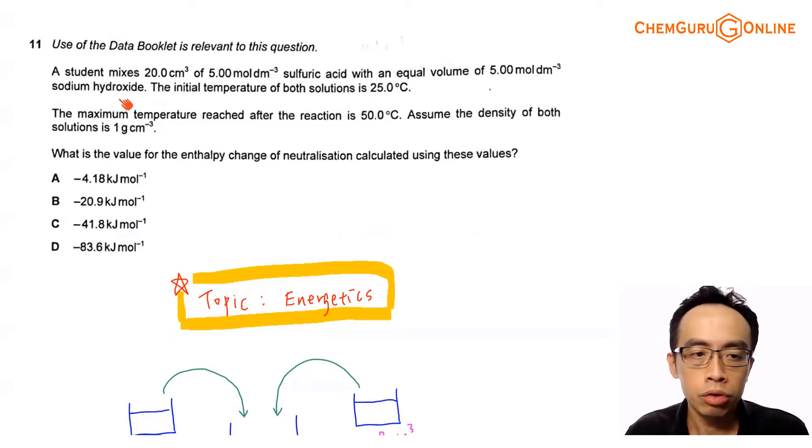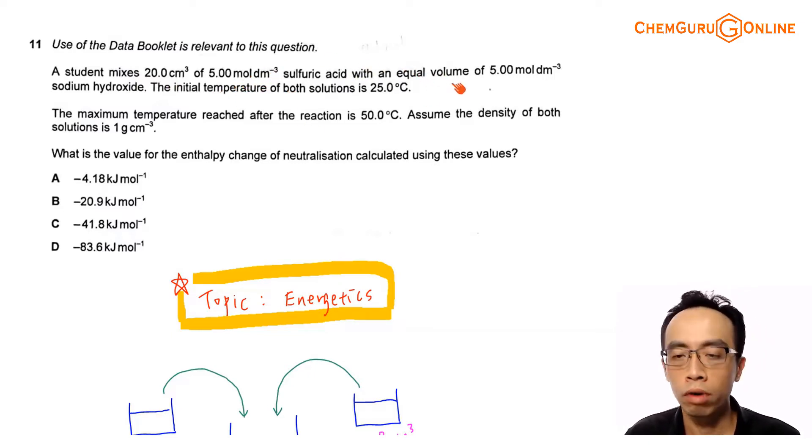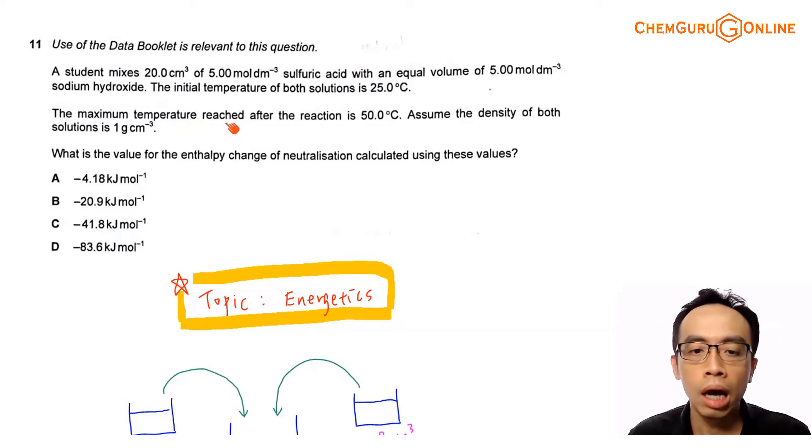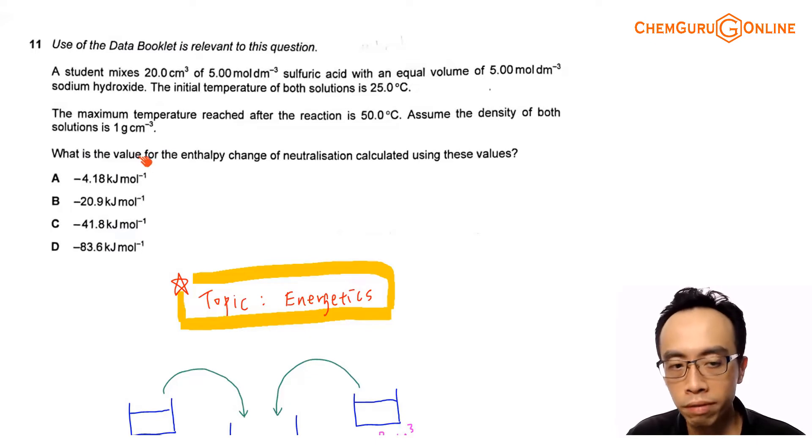Now question 11, the student mixes 20.0 cm³ of 5.00 mol per dm³ sulfuric acid with an equal volume of 5.00 mol per dm³ sodium hydroxide. Initial temperature of both solutions is 25.0 degrees Celsius. The maximum temperature reached after the reaction is 50.0 degrees Celsius, assuming density for both solutions is 1 gram per cm³.